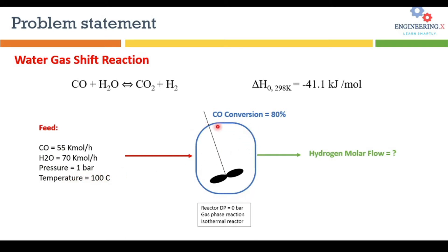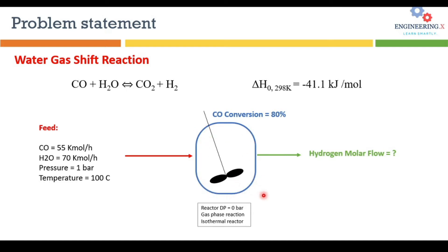The feed enters at 100°C and 1 bar pressure. The base component is carbon monoxide, and its conversion is given as 80%. We need to find the hydrogen molar flow rate in the product. We are assuming no pressure drop inside the reactor, the reaction is in the gas phase, and the operation mode is isothermal.